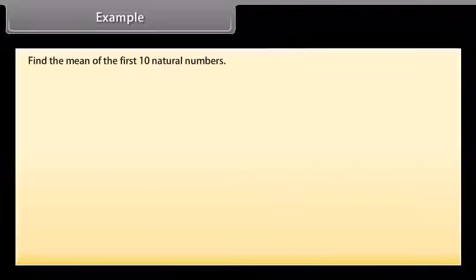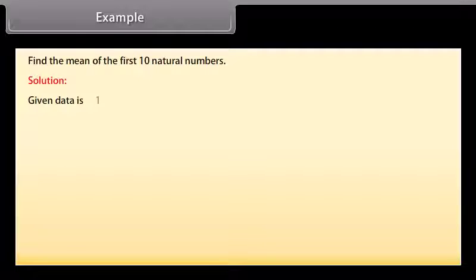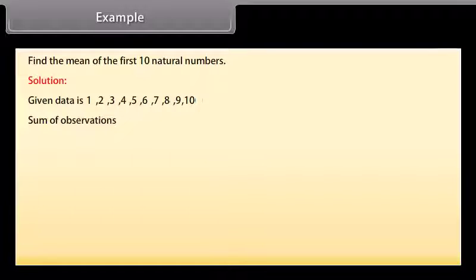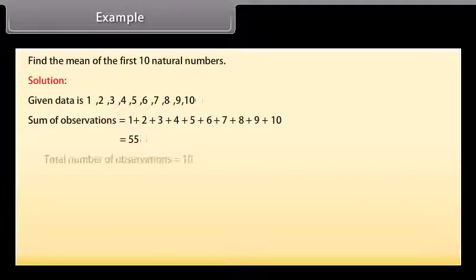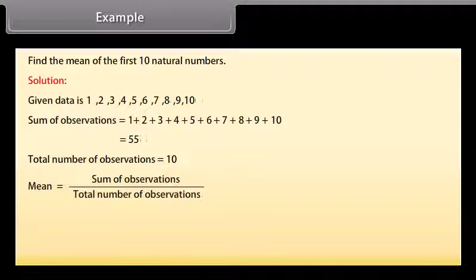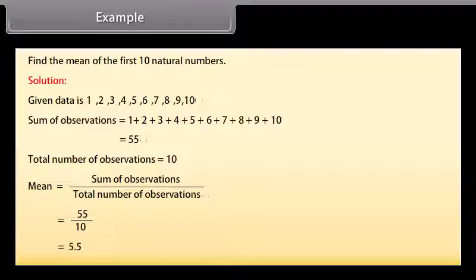Example: Find the mean of the first 10 natural numbers. Solution: The given data is 1, 2, 3, 4, 5, 6, 7, 8, 9, 10. The sum of observations equals 1 plus 2 plus 3 plus 4 plus 5 plus 6 plus 7 plus 8 plus 9 plus 10, which equals 55. Total number of observations equals 10. Mean equals sum of observations divided by total number of observations, which equals 55 divided by 10, equals 5.5.